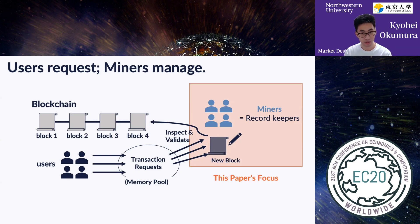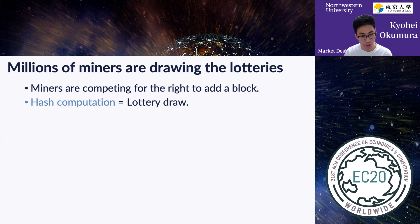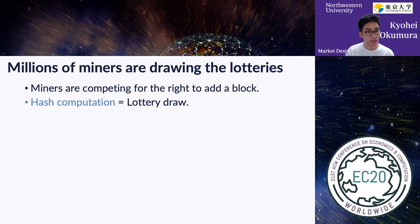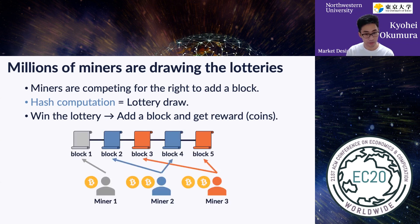Miners are actually competing for the right to add a block. They are involved in hash computation, which is equivalent to a lottery draw — every time they compute a hash value using their computer, they draw one lottery and see whether they win or not. Millions of miners are working on this hash computation all over the world, and the one who wins first is allowed to add a block and get the reward paid by Bitcoin. All miners are working for this block reward.